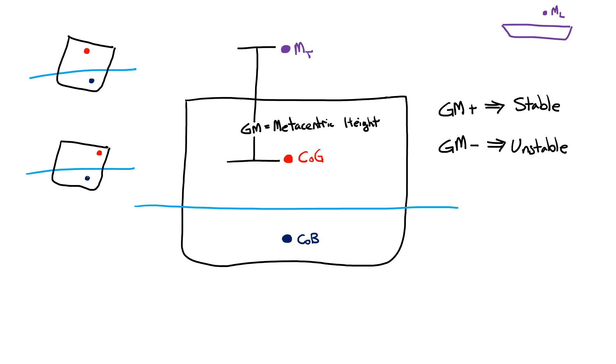The center of buoyancy provides an upwards force. The center of gravity provides a downwards force. That's true in both cases. And you can see that the moment that develops in this one is clockwise, where the moment in this one is counterclockwise. And therefore this ship wants to just put itself back up in the upright position, where this ship wants to continue to roll and will capsize.